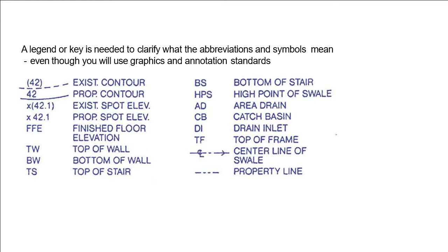So for example you will have a layer for existing contours. You will have another layer for proposed contours and right down the line of the list that you can see here. Each of these will require a separate layer.